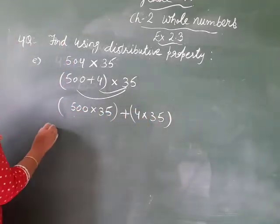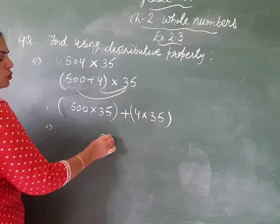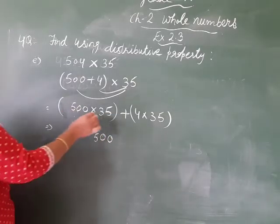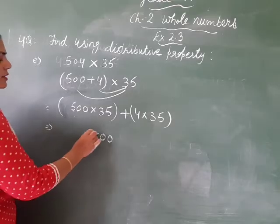500 into 35, we put 2-0 at the last. Then 5 times 5, 25 to carry, 5 times 3 is 15, 16, 17. Clear?